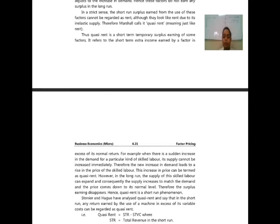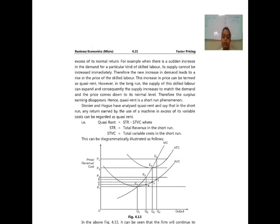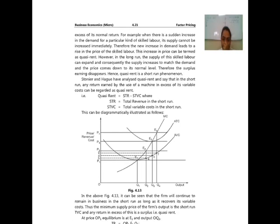Quasi rent is a short-term temporary surplus earning of some factors. It refers to short-term extra income earned by a factor in excess of its normal earnings. For example, where there is a sudden increase in the demand for a particular kind of skilled labour, its supply cannot be increased immediately. Therefore, the increase in demand leads to a rise in the price of skilled labour — this increase in price can be termed Quasi rent. However, in the long run, the supply of skilled labour can expand and the price comes down to its normal level, so the surplus earning disappears. Hence Quasi rent is a short-run phenomenon.